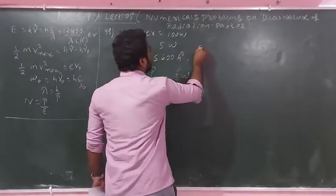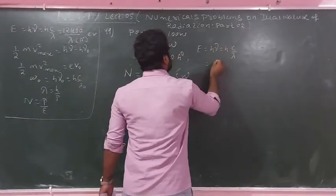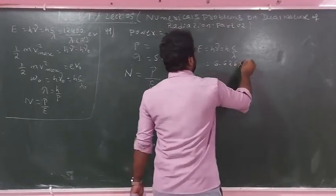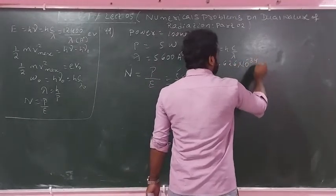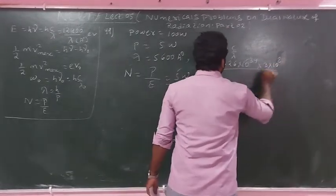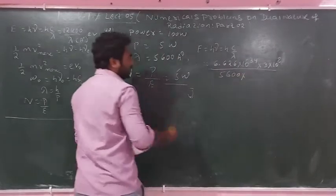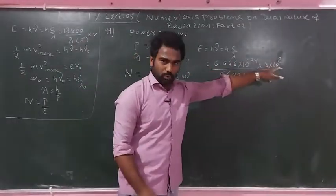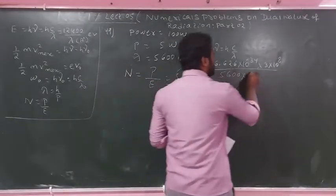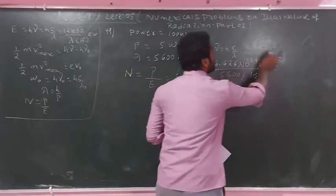The formula is E = hc/λ. h is Planck's constant 6.626×10⁻³⁴, c is speed of light 3×10⁸ m/s, and λ is 5600 angstrom. For SI system, convert angstrom to meters: 1 angstrom = 10⁻¹⁰ meter. Substitute these values and solve for the energy of one photon.